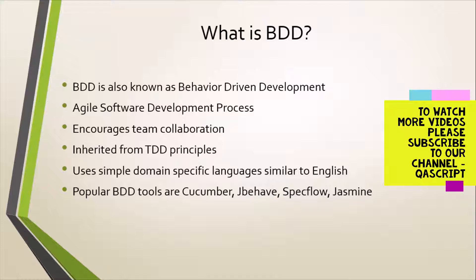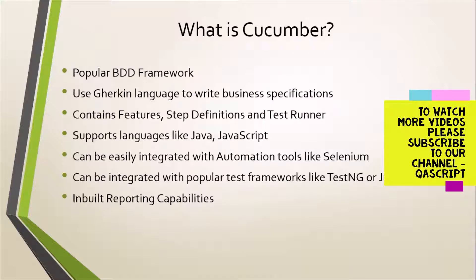Now we are going to look at Cucumber, which is one of the most popular BDD frameworks used across the industry. Cucumber is a BDD framework — some people call it a tool as well. It has got some components which work together very beautifully to give you a complete framework. The most important and beautiful part of Cucumber is it uses a domain-specific language called Gherkin. Gherkin is a language written to specify your business requirements.